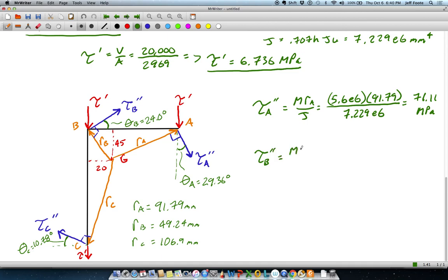Tau B is done in a similar way. We just have RB instead of RA. So same values here, just changing the radius. And out of this one, we get 38.14. And then tau double prime at C. It's going to be the moment times RC over J, which is 82.81.